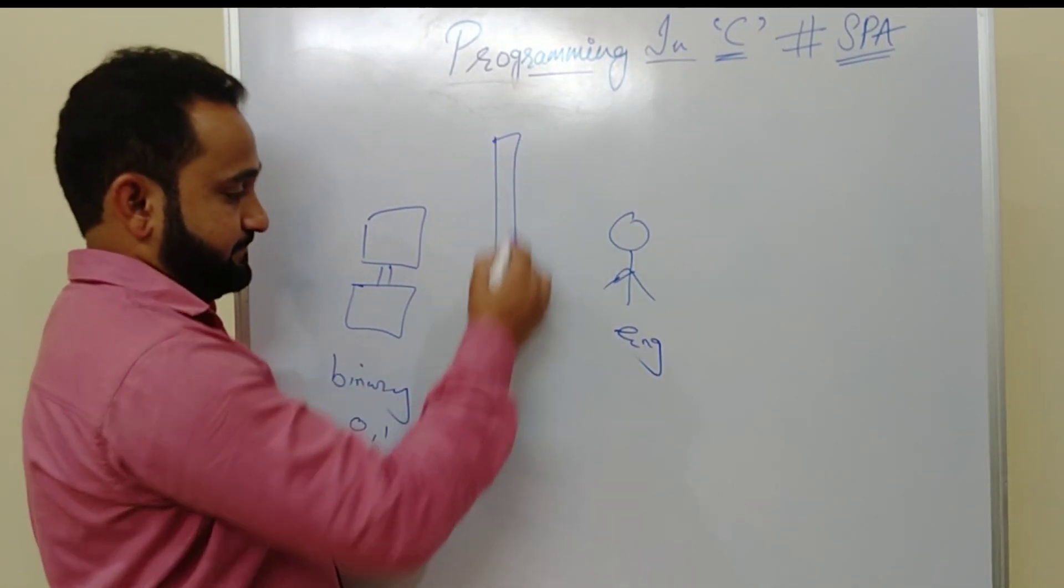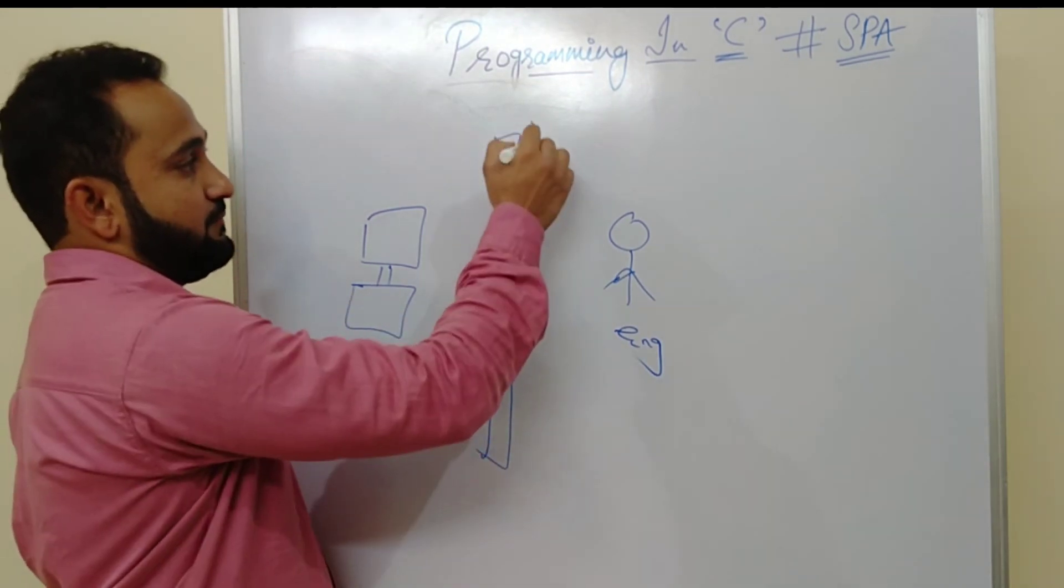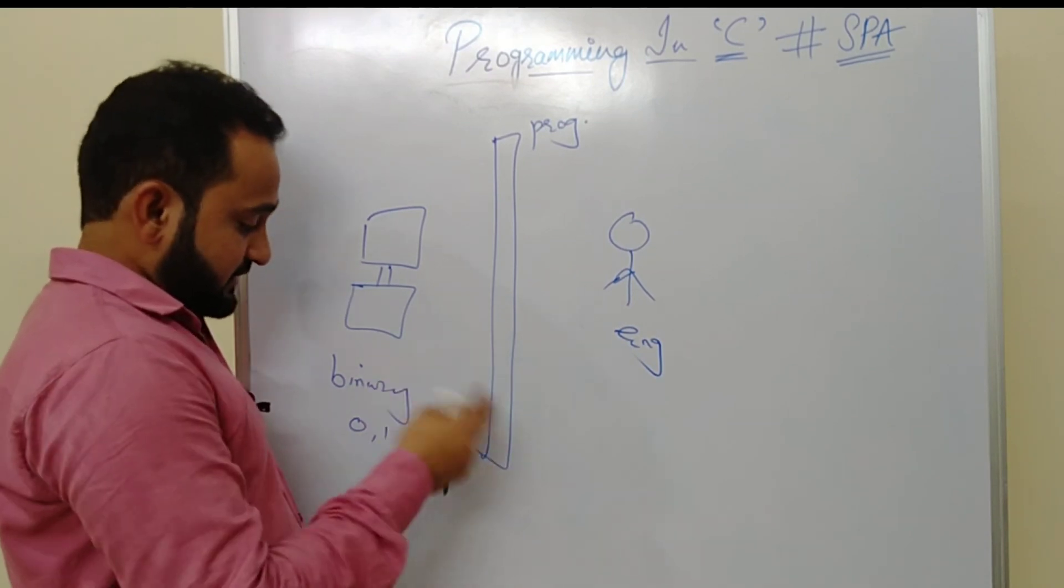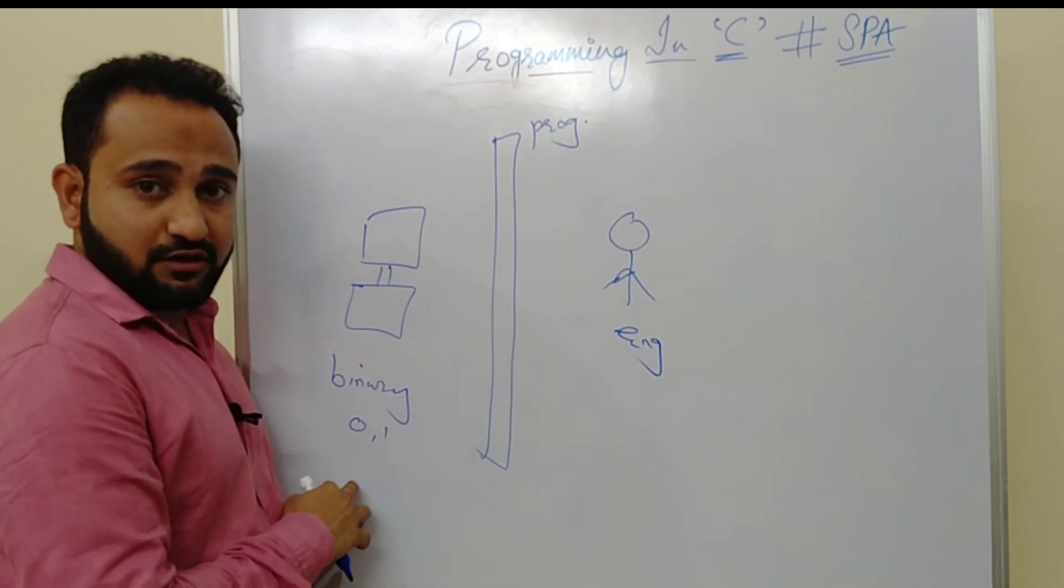For example, if I want to watch a movie which is there on the desktop of my computer and I have been asked to give instructions in binary language. So it's not feasible for me to give instructions in binary language and see the movie. So what we do? We have someone in between. We have programming language.